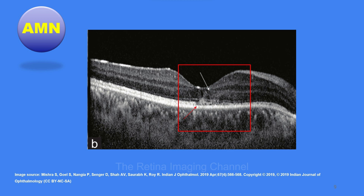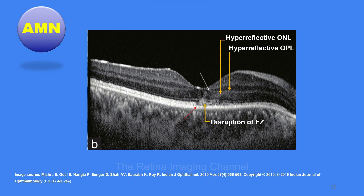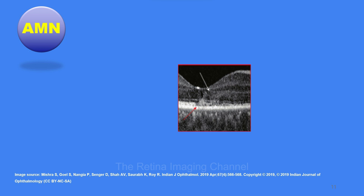Clinically, AMN lesions are seen as petaloid dark lesions near the fovea, which appear hyperreflective on infrared imaging. The horizontal OCT line scan shows hyperreflectivity of ONL and OPL, traversing deeper to the area of disruption of ELM and EZ. The same area has been highlighted with a red square for clearer understanding. Looking more closely, we see that a curved zone of hyperreflectivity traverses the OCT scan, starting from OPL and going down to EZ.